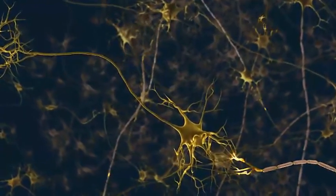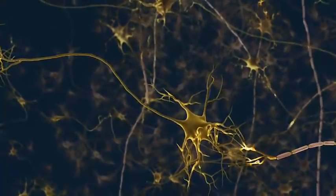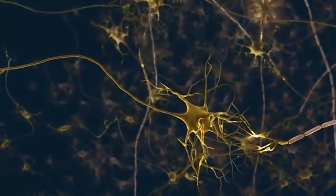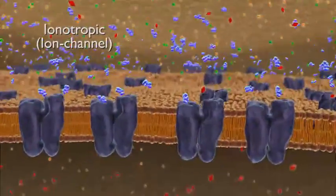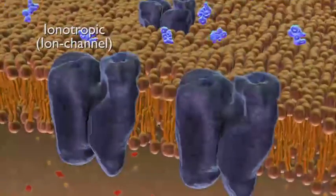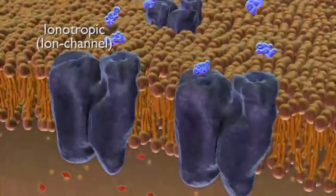Following the action potential, neurotransmitters are released into the synapse. The transmitter molecules bind with specialized structures called receptors on the postsynaptic, or receiving neuron's membrane.